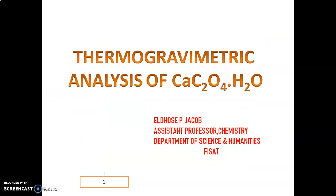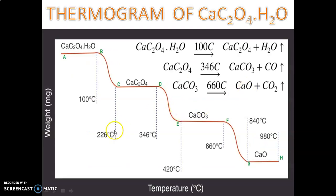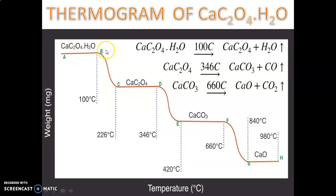In this class we are discussing the thermogram or output of CaC2O4·H2O, calcium oxalate. The thermogram is a plot between temperature versus weight. The thermogram consists of mainly two parts: a steady part and a curve part. The steady part indicates that the compound is stable during that temperature range.